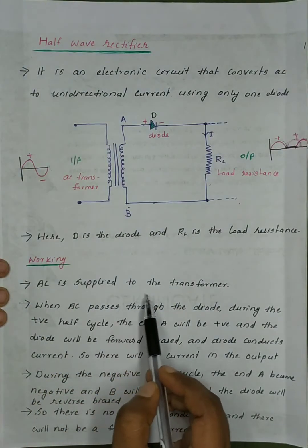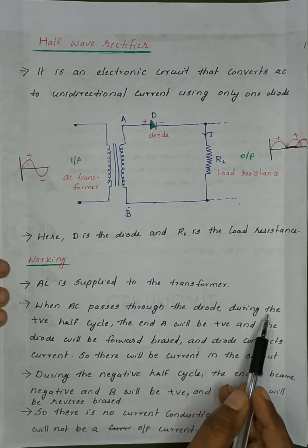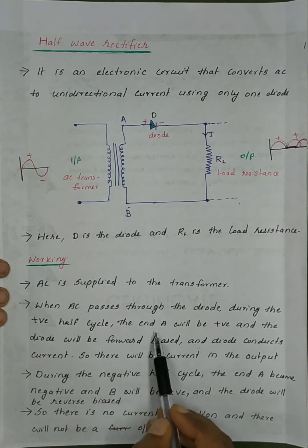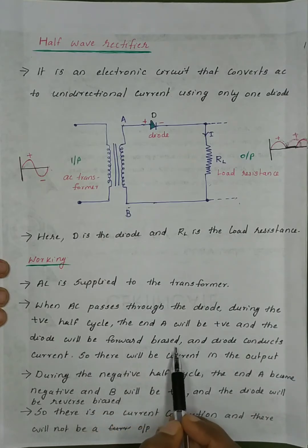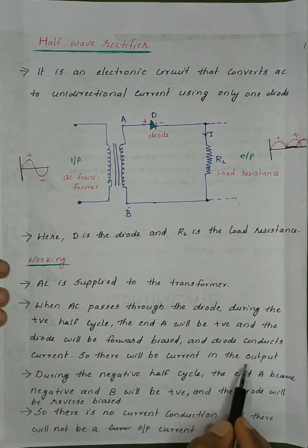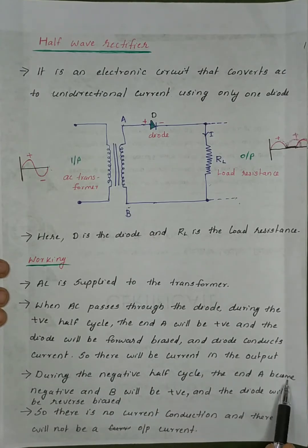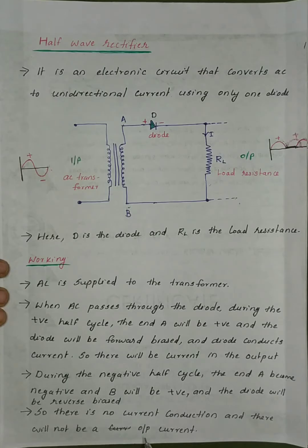AC is supplied to the transformer. When AC passes through the diode during the positive half cycle, end A will be positive and the diode will be forward biased, so the diode conducts current and there will be a current in the output. During the negative half cycle, end A becomes negative and B will be positive, and then the diode will be reverse-biased, so there is no current conduction.